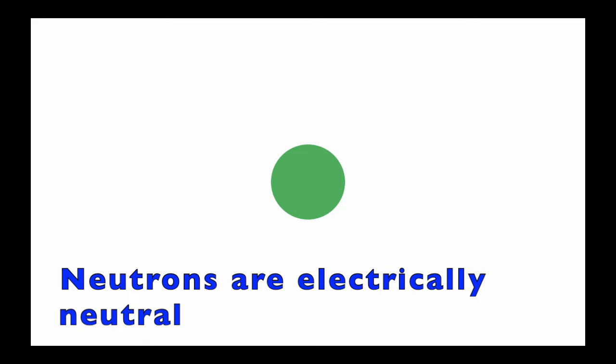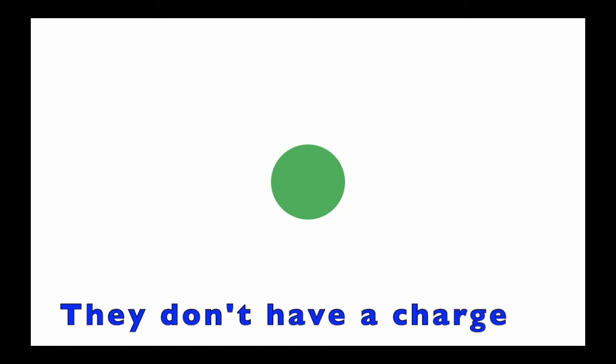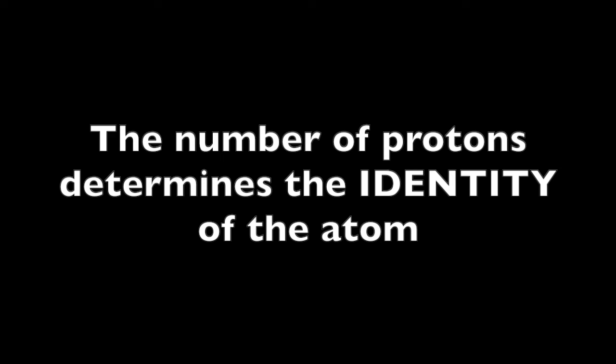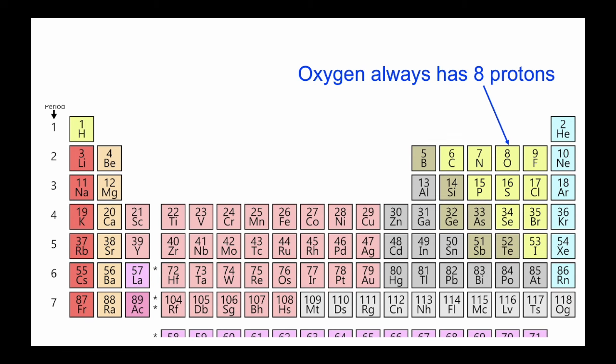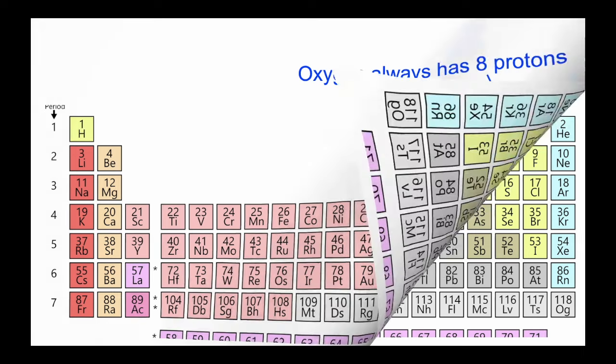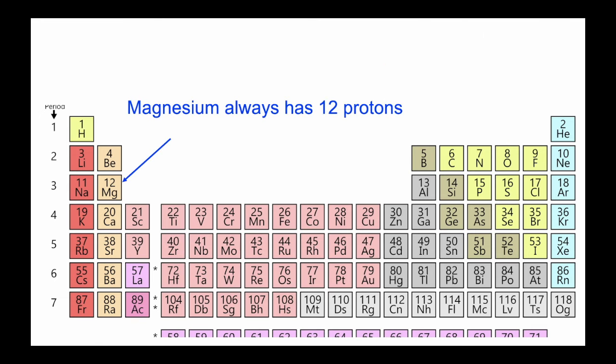Neutrons are electrically neutral, which means they don't have a charge. Elements are defined by the number of protons they have. This means that the number of protons determines the identity of the atom. An oxygen atom always has eight protons. If it doesn't have eight protons, it's not oxygen. A magnesium atom always has 12 protons. Never more, never less.